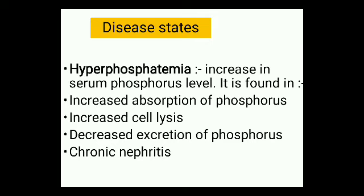The first disease state is hyperphosphatemia — 'hyper' means above and 'emia' means blood, so this refers to a high level of phosphate in blood, above the normal level. This can happen when there is increased absorption of phosphorus, increased cell lysis, or decreased excretion of phosphorus. Certain drugs and chronic nephritis can also cause hyperphosphatemia.